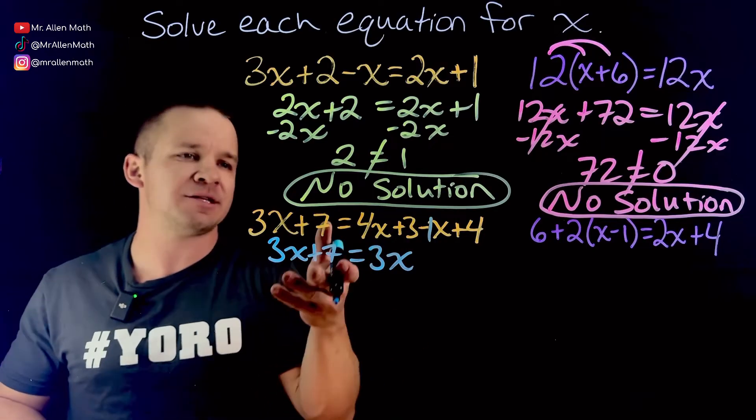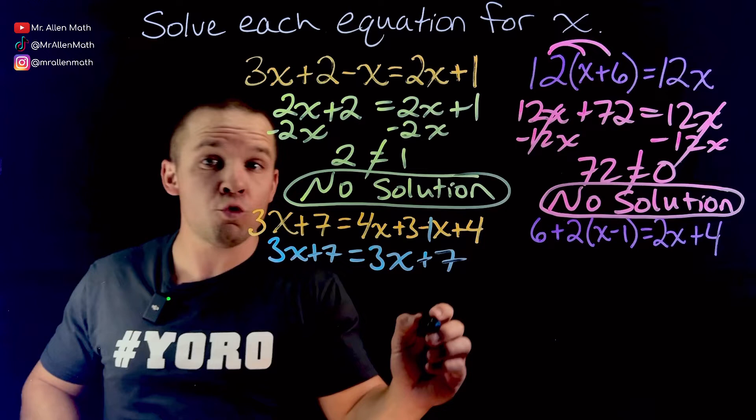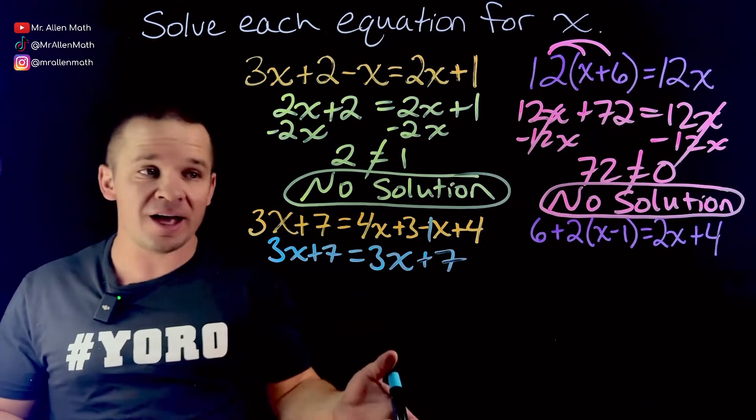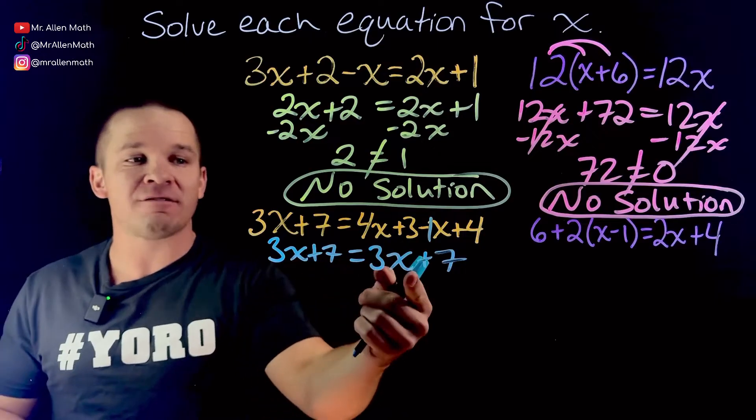And then I've got 3 plus 4 here, that's gonna give me 7, ooh. I have the same thing on each side. Anything I plug in for x here, I have to plug in here.